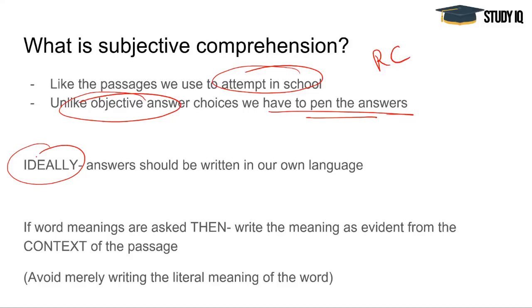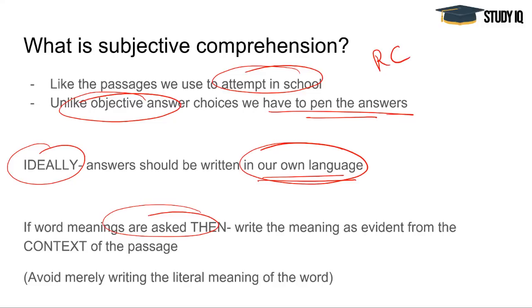Also, if you have been asked a word meaning — because you will not be given options here in subjective comprehension — you must remember that the word meaning is not just written literally, but is derived from context. Whatever is evident from the context, you must write the word meaning accordingly. Avoid writing the literal meaning. Always write the word meaning in context.